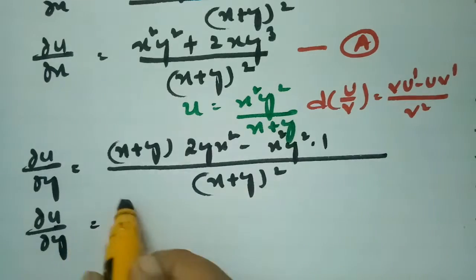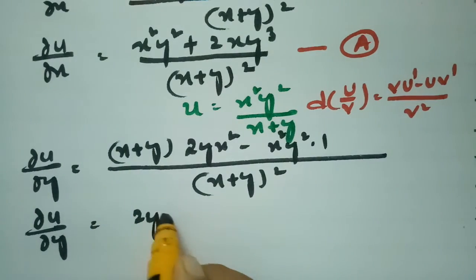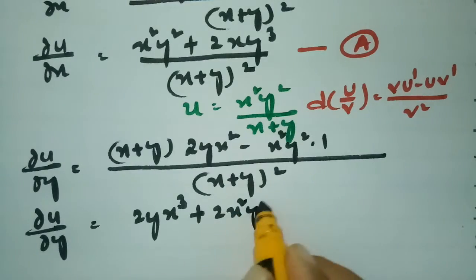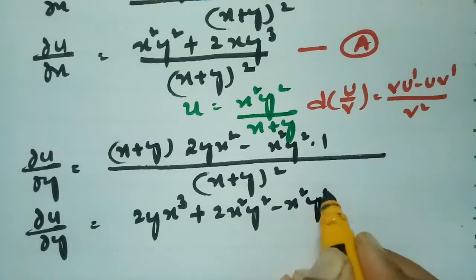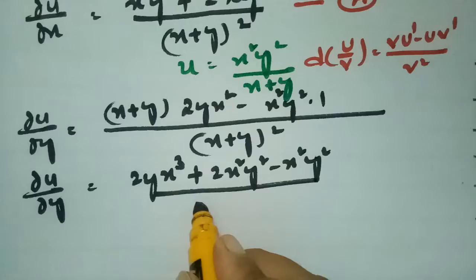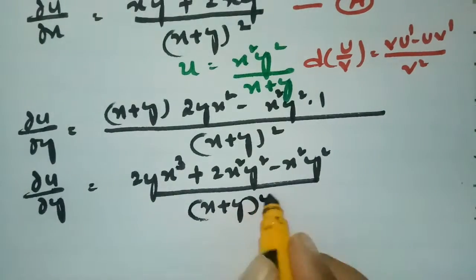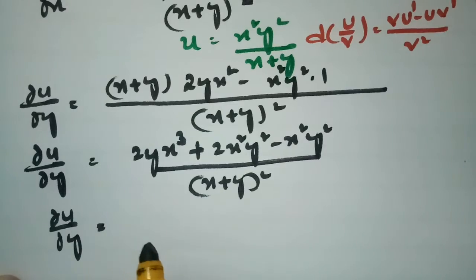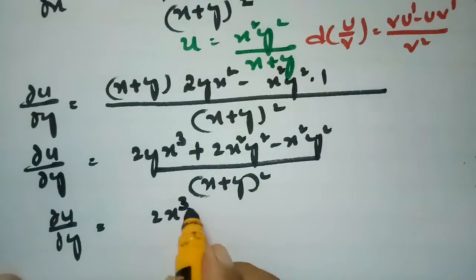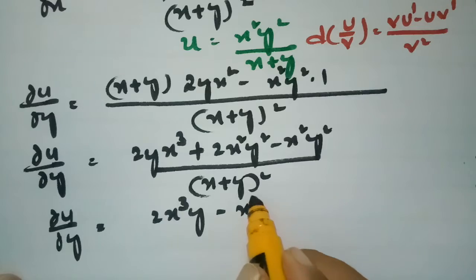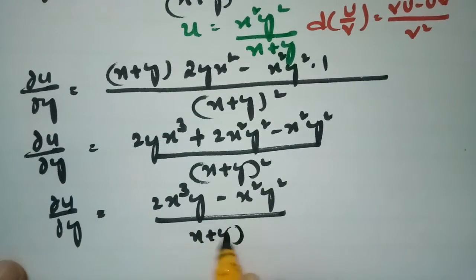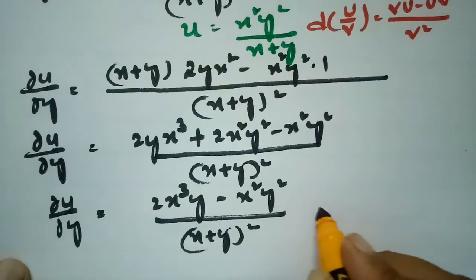So ∂u/∂y value: multiplying gives 2yx³ plus 2x²y² minus x²y², divided by (x+y) whole square. Therefore ∂u/∂y equals 2x³y plus x²y² divided by (x+y) whole square. Both partial derivatives are now ready.